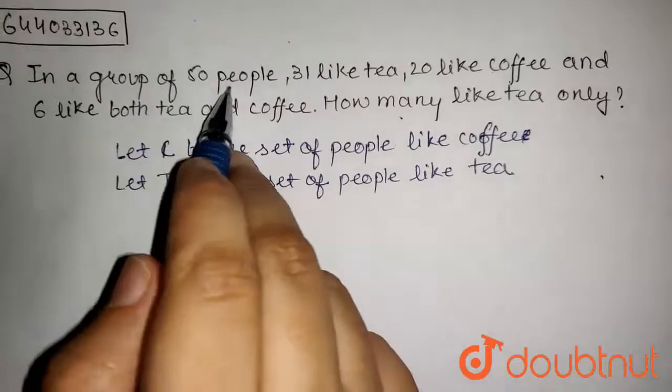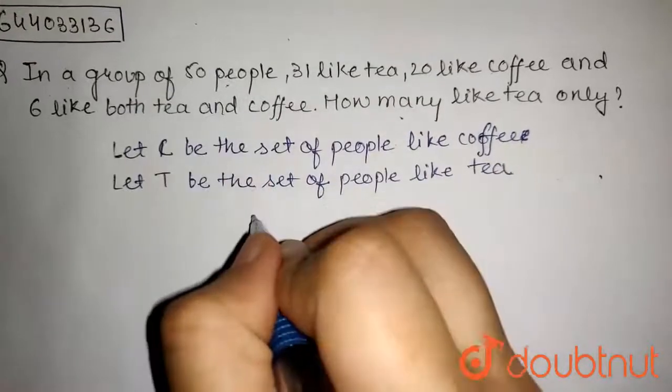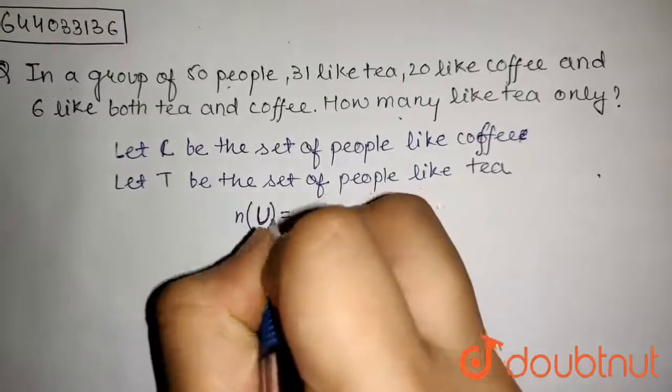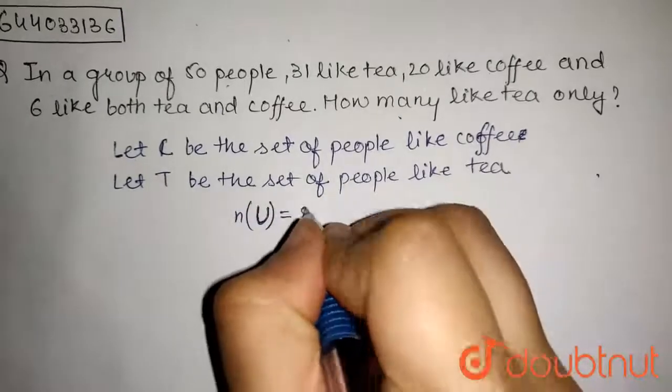that is, there is a group of 50 people, so the universal number of elements in universal set is 50.